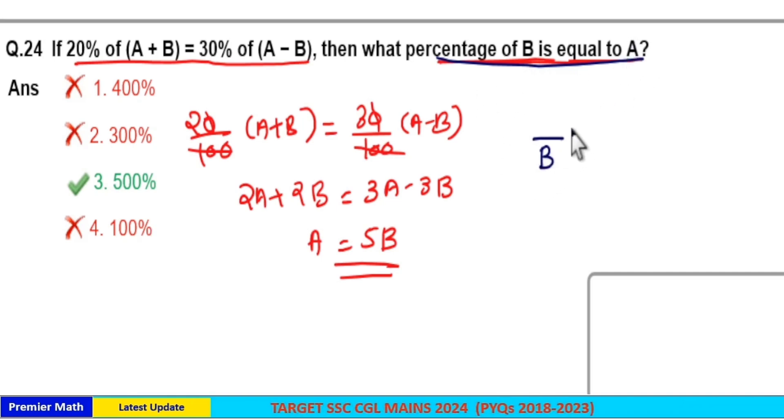Now write a in terms of b and convert it into percentage. Here a is equal to 5b. So 5b by b into 100 means 500%.